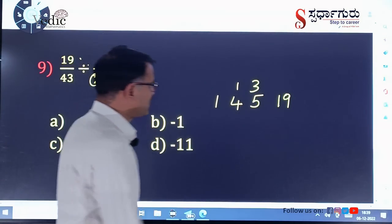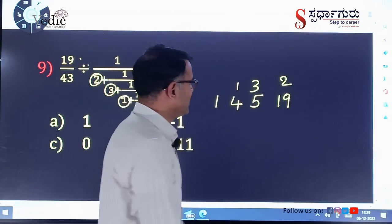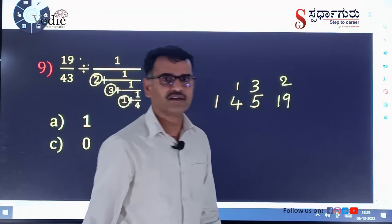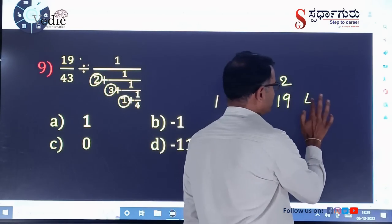Then next, take the 2 and write it above the 19. Now you can calculate: 19 times 2 is 38. 38 plus 5 is 43.